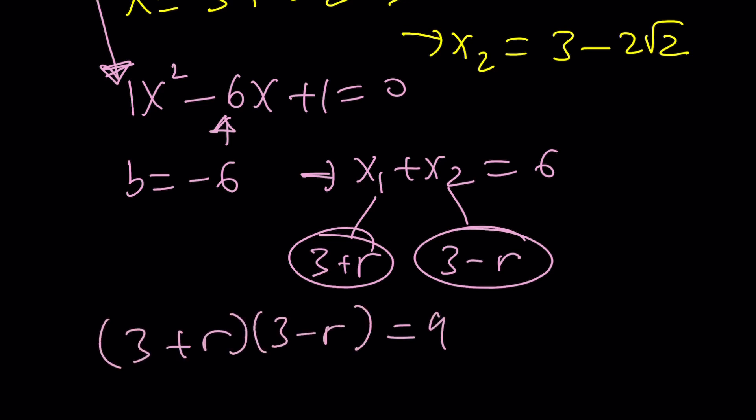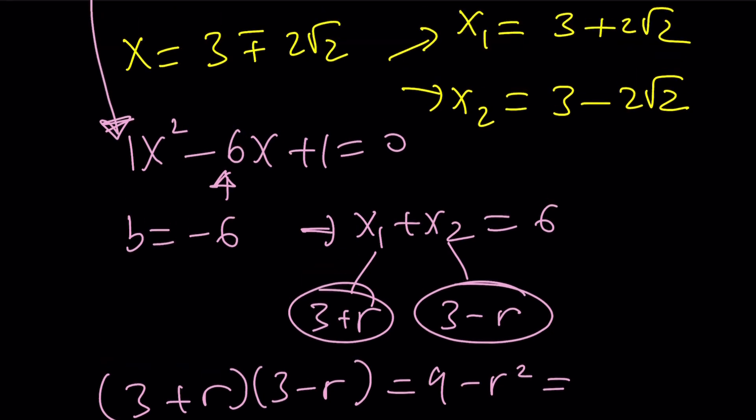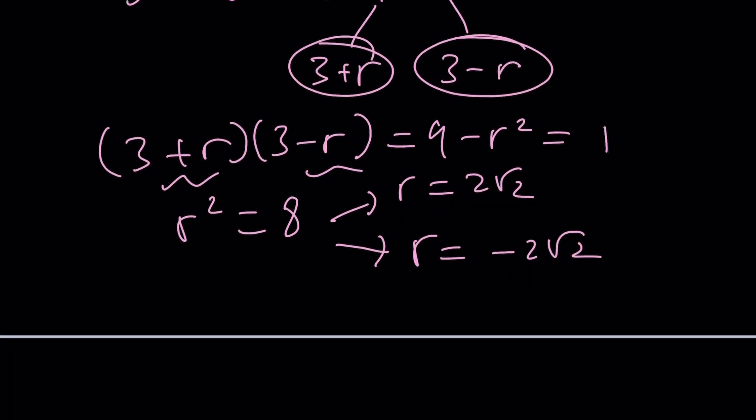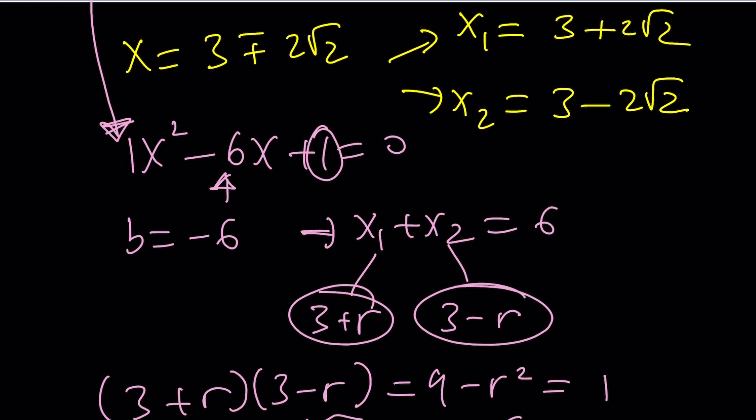And then we're just going to use Vieta's formulas. The product is this, which is 9 minus r squared. And from Vieta's formulas, the product is c over a, which is 1 in this case. From here, we get r squared equals 8, which gives us r equals 2 root 2 and negative 2 root 2. Along with this, you're going to get the exact same solution. It's just another way, a cooler way to solve quadratics, especially when the b is even, because it's easy to cut in half.